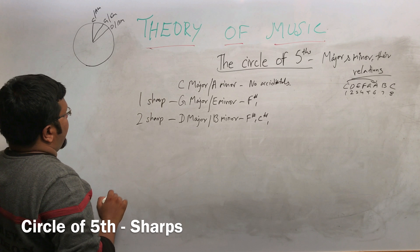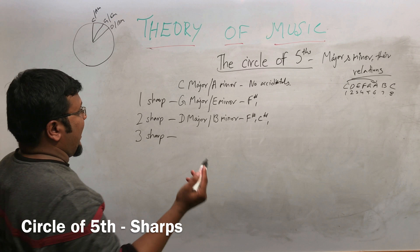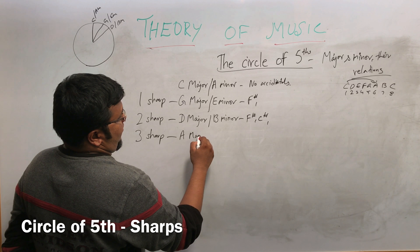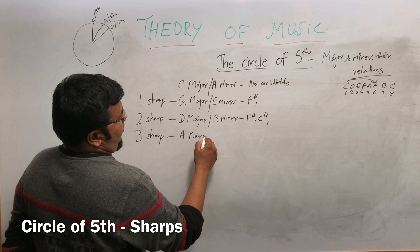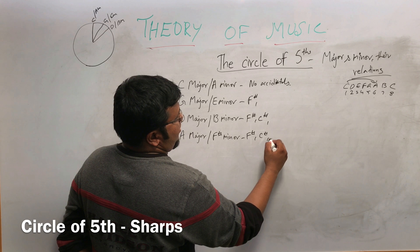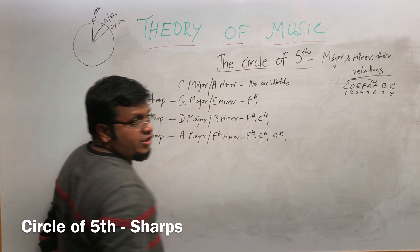Now the three-sharp scale. From D major, counting D, E, F-sharp, G, A — that gives us A major scale. The notes of A major include A, B, C-sharp, D, E, F-sharp, G-sharp.